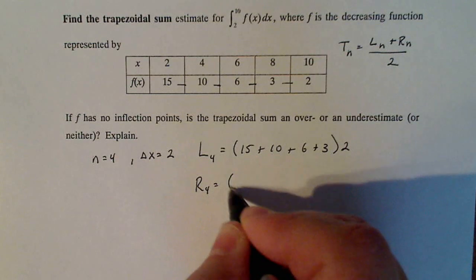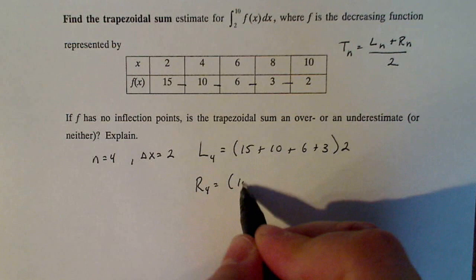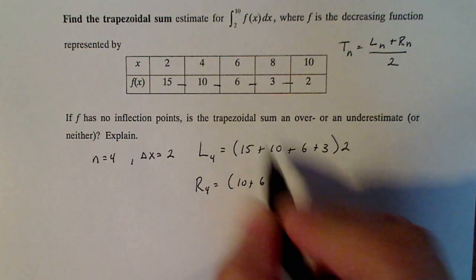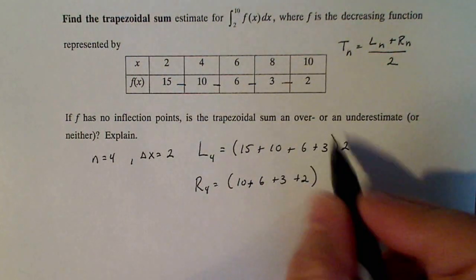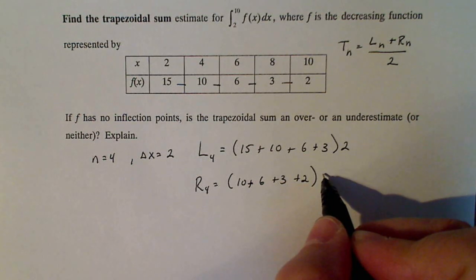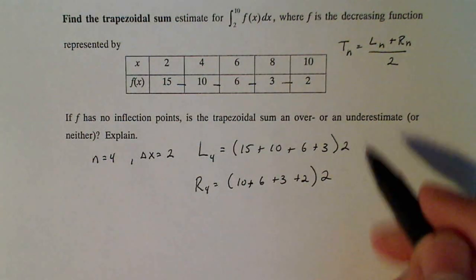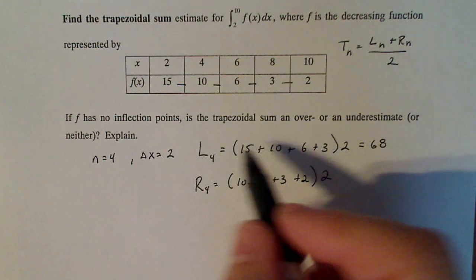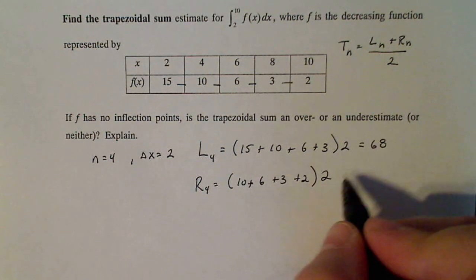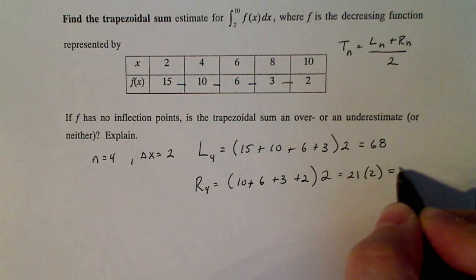The right hand sum is exactly the same, except I use the right endpoint of every interval. So this interval is 10, this one is six, this one is three, and this one is two. I have to use delta x because I'm doing an area of rectangles. When I do the mathematics, I end up with the number 68 for the left sum. This number in here is 34, and that's times two. This number here is 21 times two, which is 42.